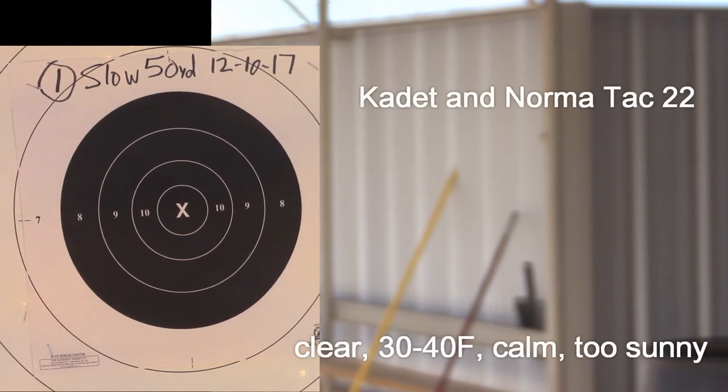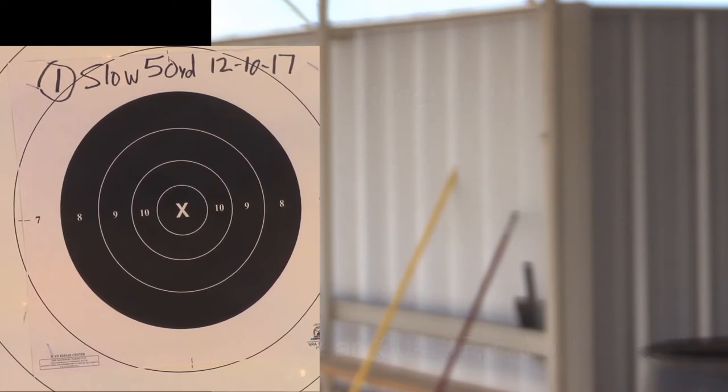So what we're going to do is shoot the cadet, 50 yards, slow fire. I haven't taken any practice shots or anything, and I did kind of clean the gun and put some oil on it so it may not run.